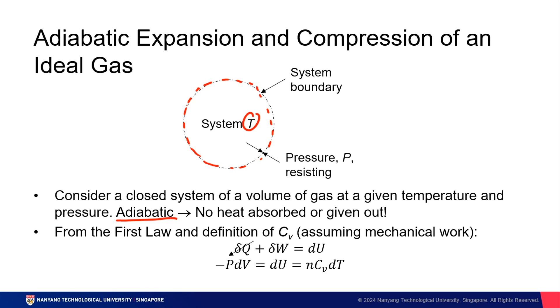So first, let's write the equation for the first law down. δQ plus δW equals dU. And because it's adiabatic, hence no heat is absorbed or given out. We can cancel this term. There is no change in heat. So δW equals dU in adiabatic expansion of an ideal gas.